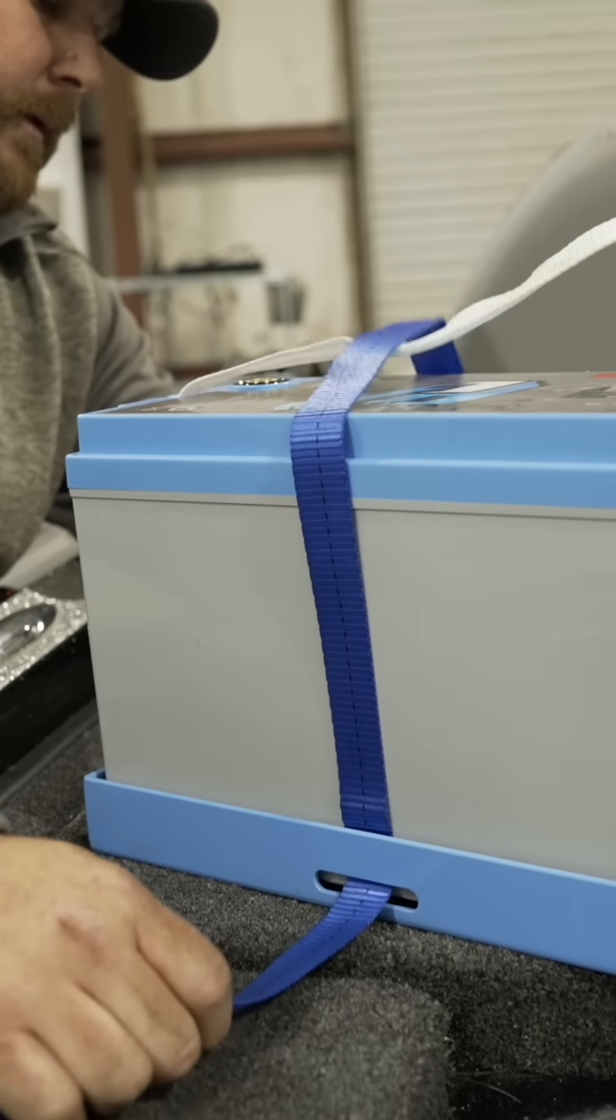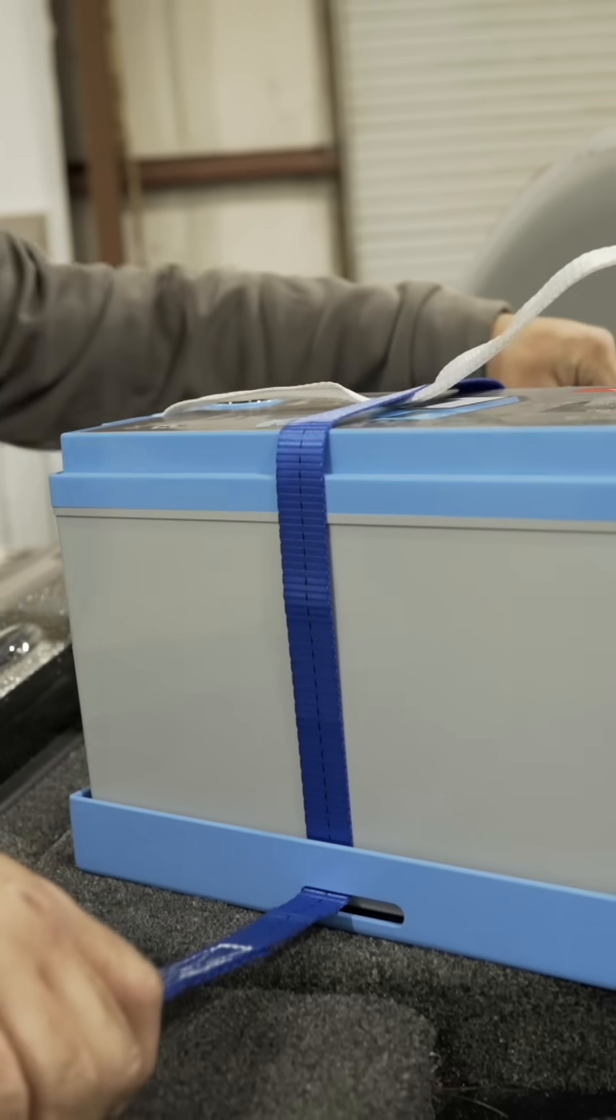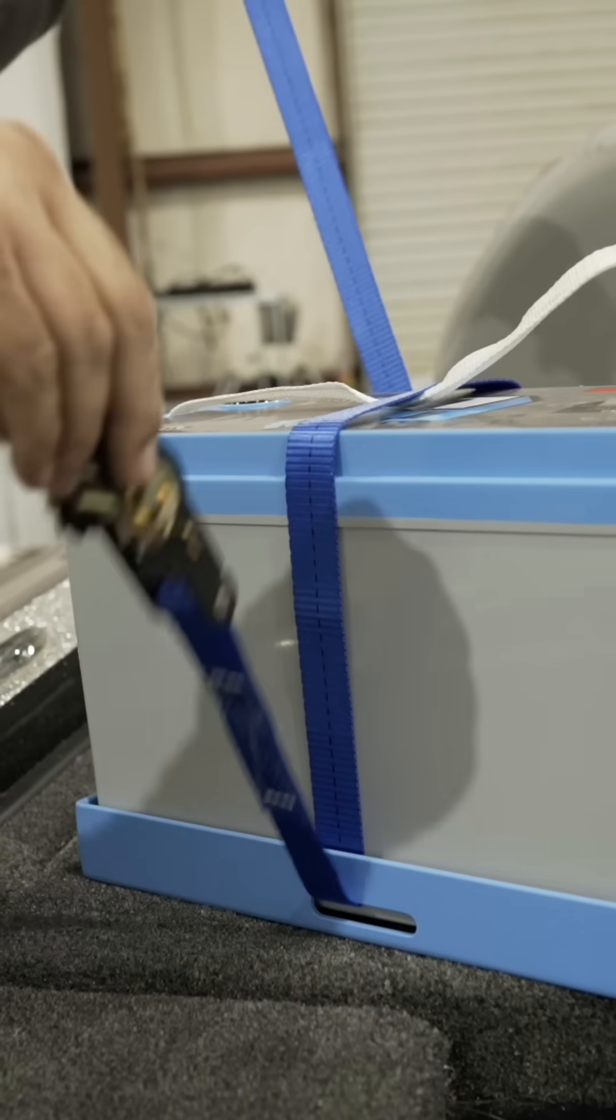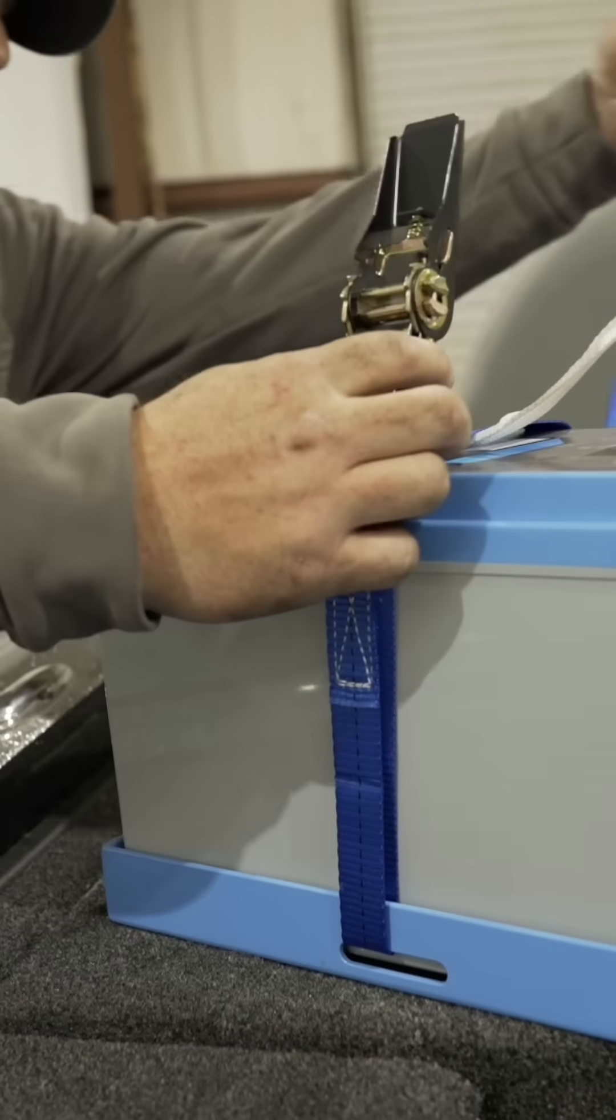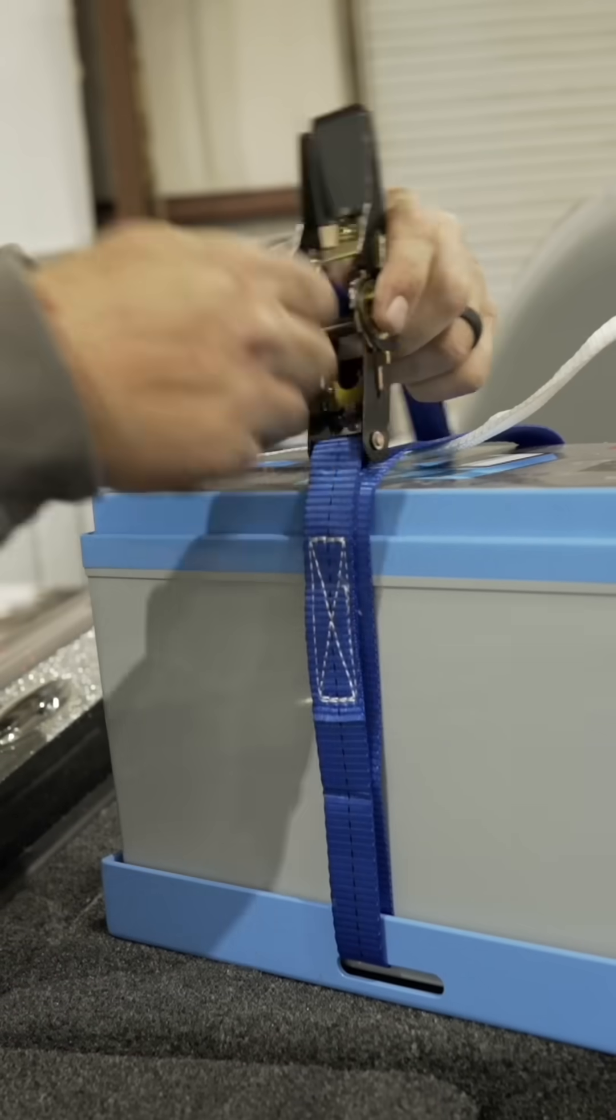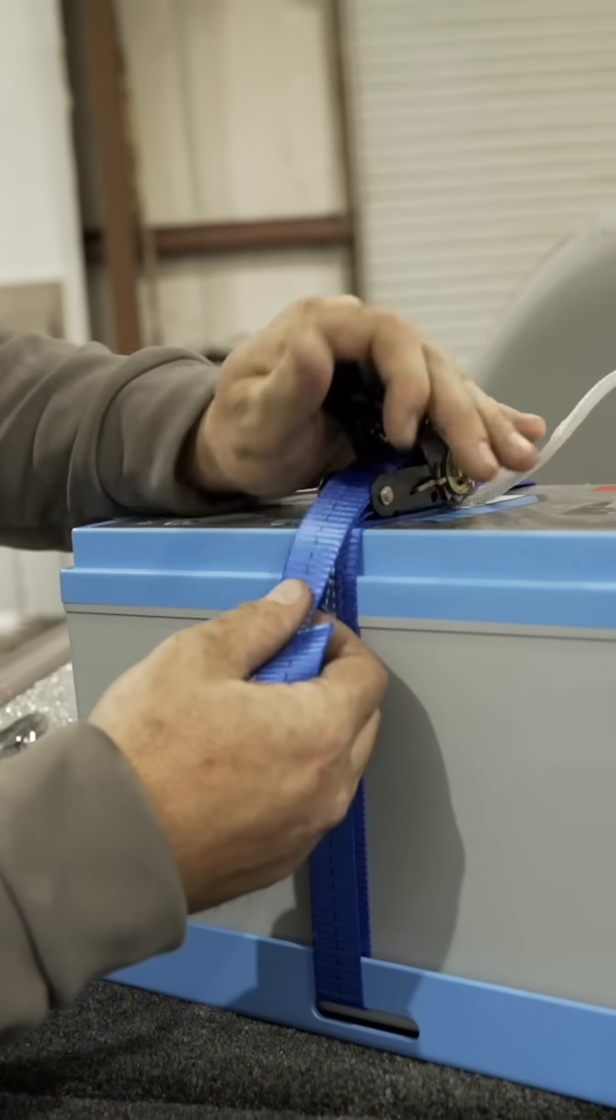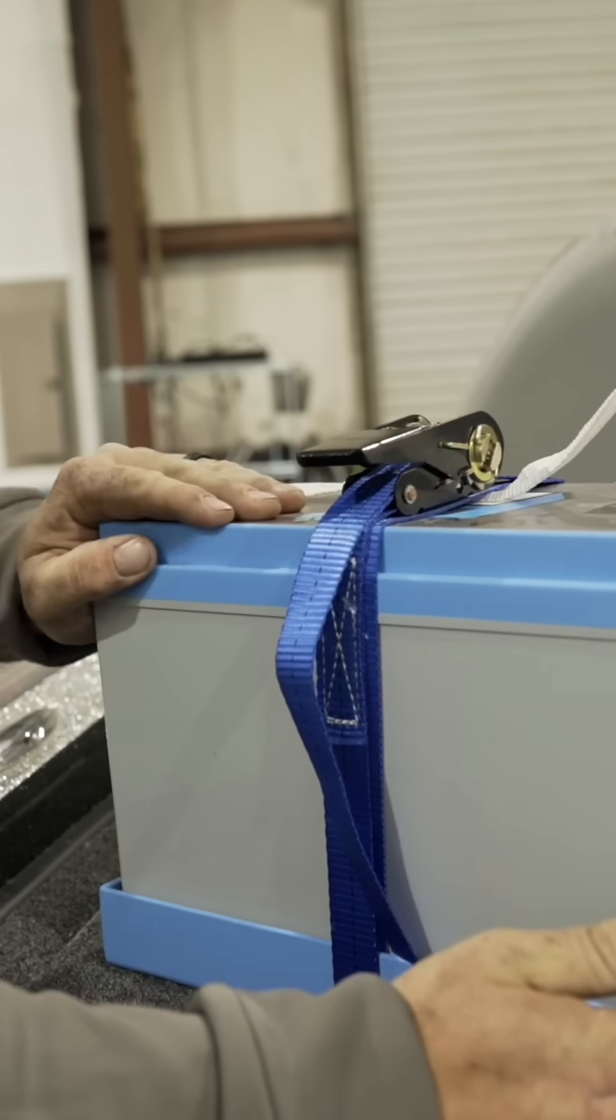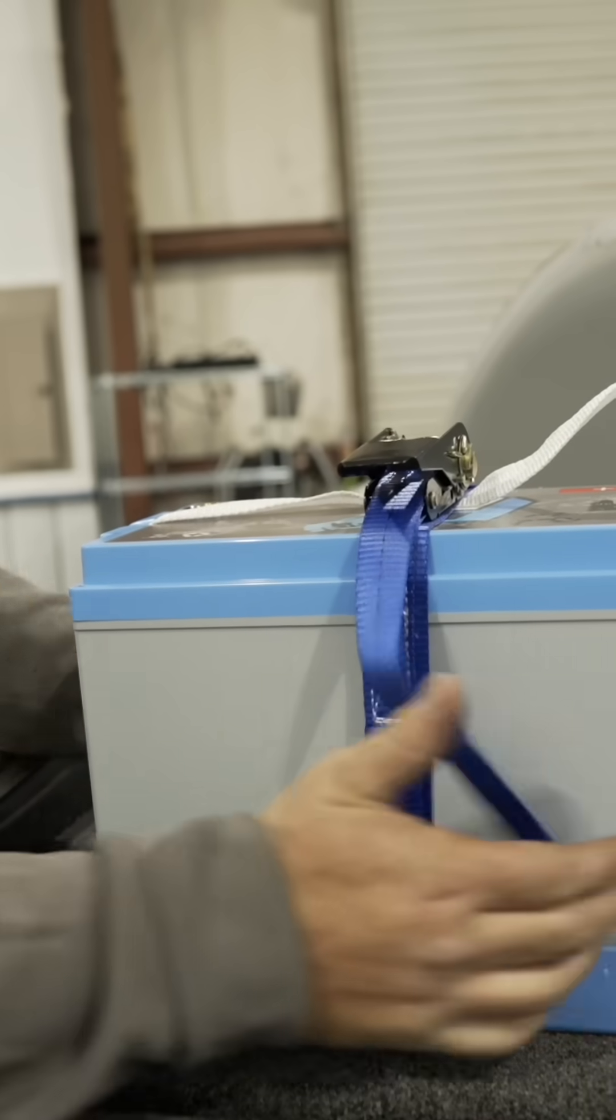Now you can start centering your strap, and what I like to do is just pull that ratchet where it's going to lay over dead center. Give her a couple clicks, not too tight. And you can see that thing is perfectly centered in that tray with the rubber mat.